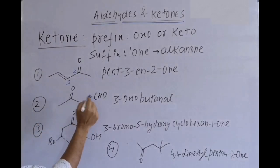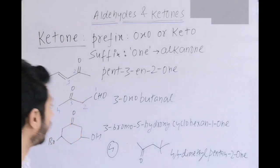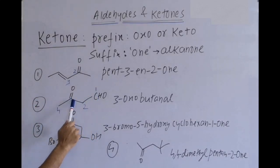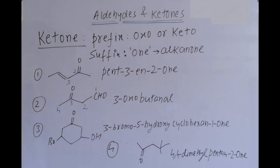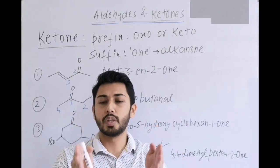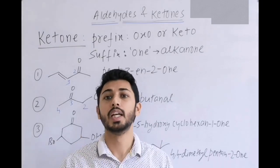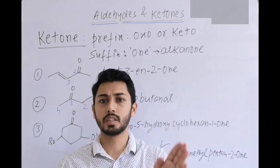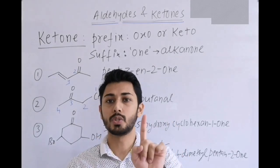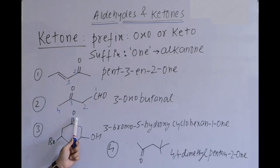Second example has two functional groups: ketone (prefix) and aldehyde (suffix). Numbering from the right: 1, 2, 3, 4 — ketone at position 3 gets prefix '3-oxo'; total four carbons gives 'butanal'. For aldehyde as suffix there is no need to mention its number (it is always C-1 in open chain). For ketone, lying within the carbon chain, always mention the number.